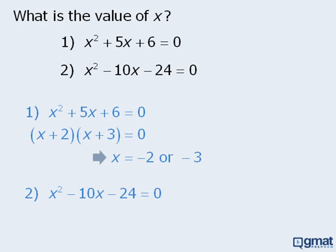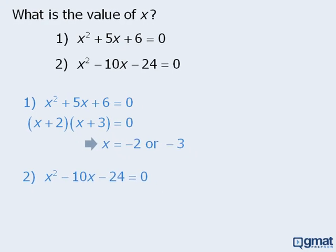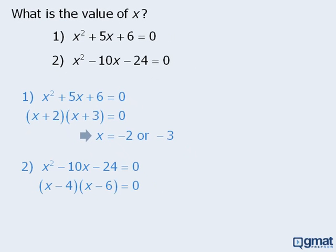Now statement 2 also provides a quadratic equation involving x. Once again, we will first factor the left-hand side. From here we can see that if x minus 4 times x minus 6 is equal to 0, then x must equal 4 or 6. At this point, we should spot the problem. From statement 1, we concluded that x must equal negative 2 or negative 3, and from statement 2, we concluded that x must equal 4 or 6. How can it be true that x equals either negative 2 or negative 3 and x equals either 4 or 6?